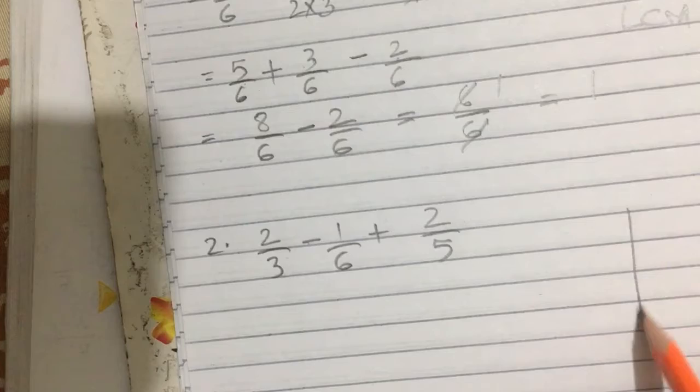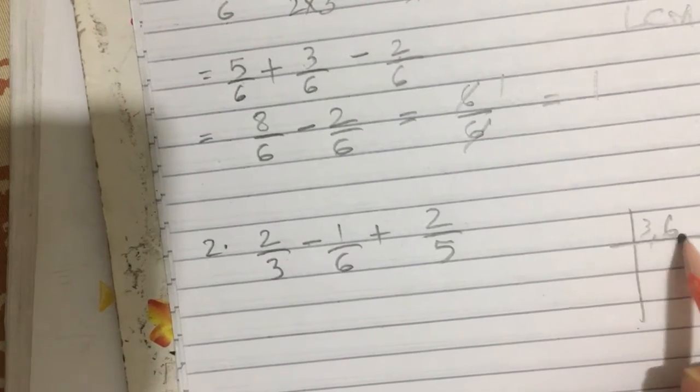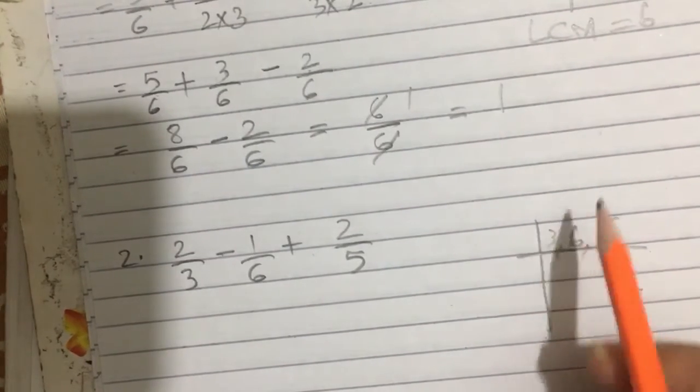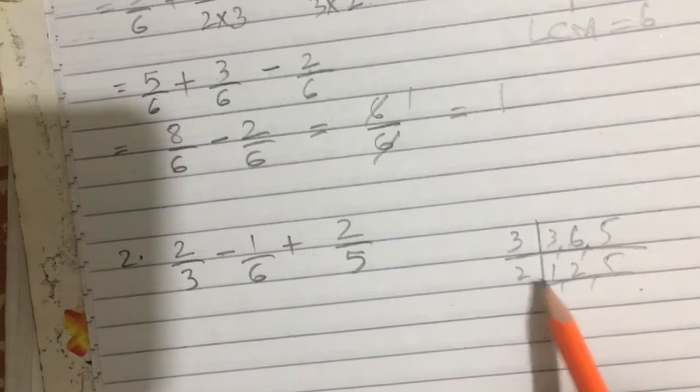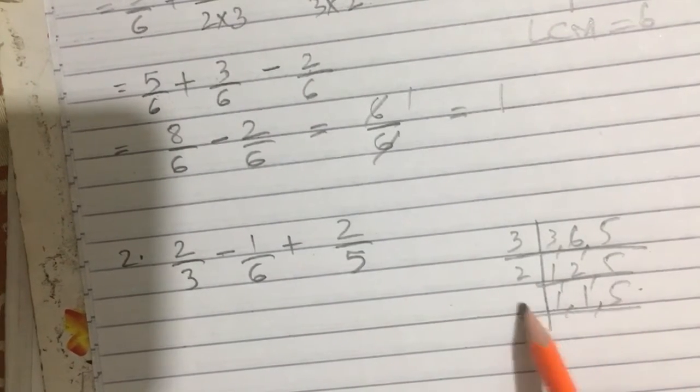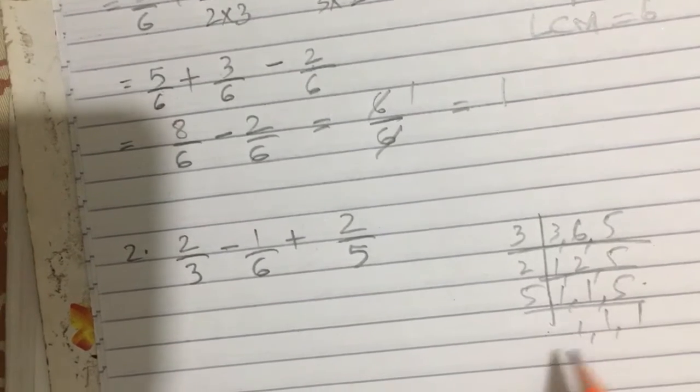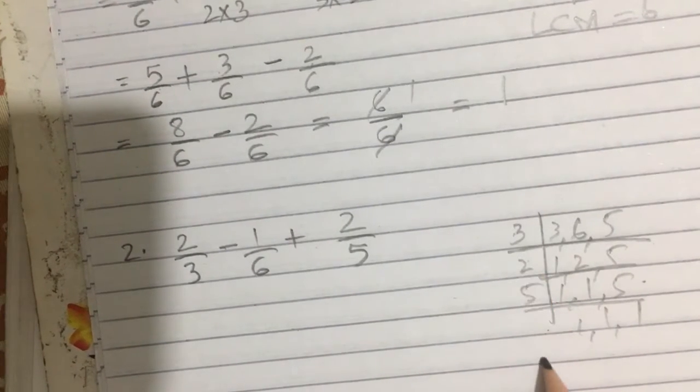We will solve this too by taking LCM of denominators: 3, 6, and 5. This is 3 ones are 3, 3 twos are 6. 5 twos, 1s are 2 and 5, and 5 ones are 5. 5 twos are 10 and 10 threes are 30. So LCM is 30.